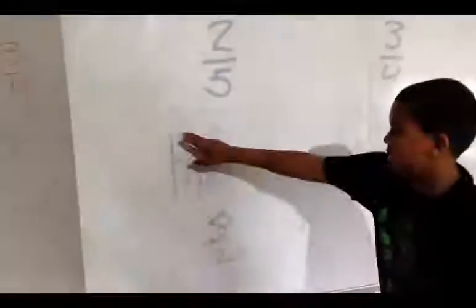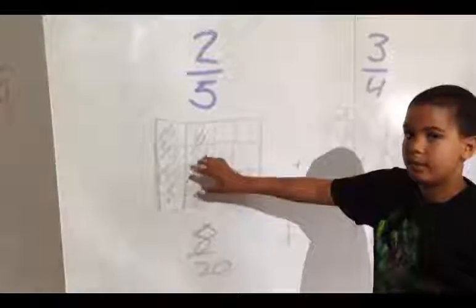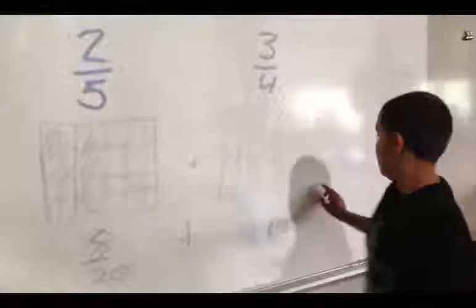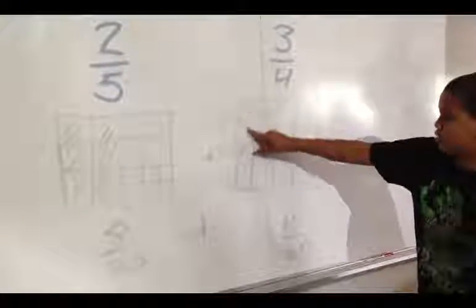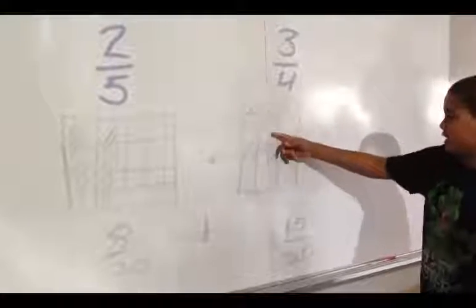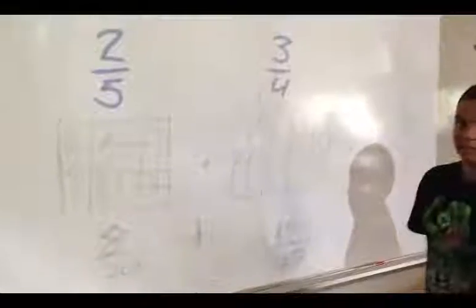Where does the 8 twentieths come from? The 8 twentieths come from because these are 2, 4, 6, 8. So when you crossed the 2 fifths, it made 8 twentieths. Yes. Can you explain the other one — how did your 3 fourths become 15 twentieths? It became it because you count — it's basically like that one, when you count. And so now because you have the same unit — 20ths and 20ths — you can add them together. Yes. Thank you very much. You're welcome.